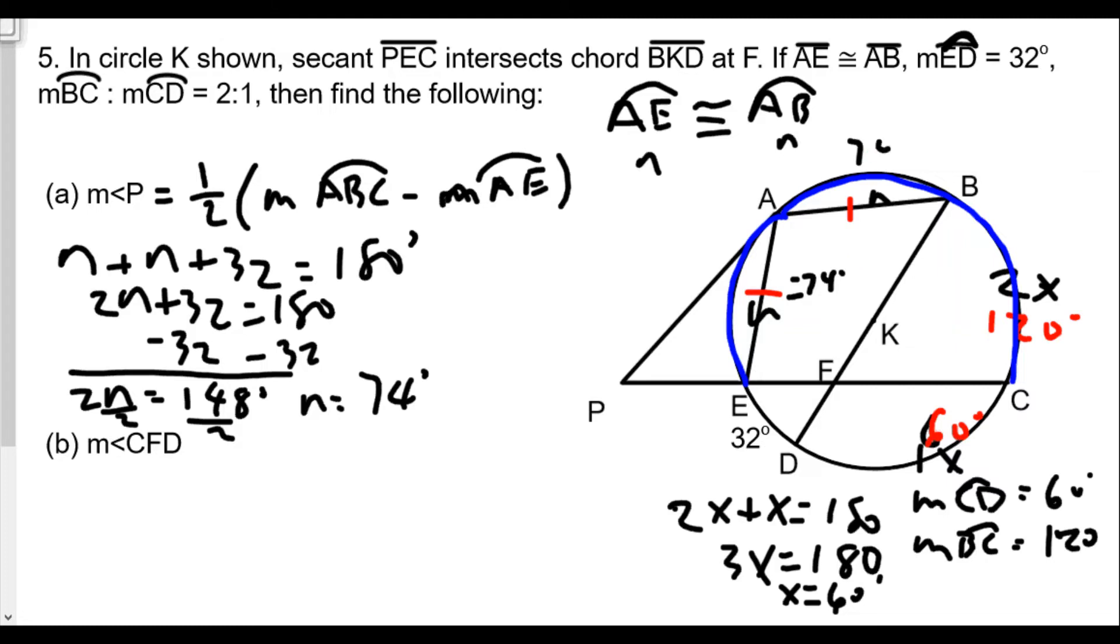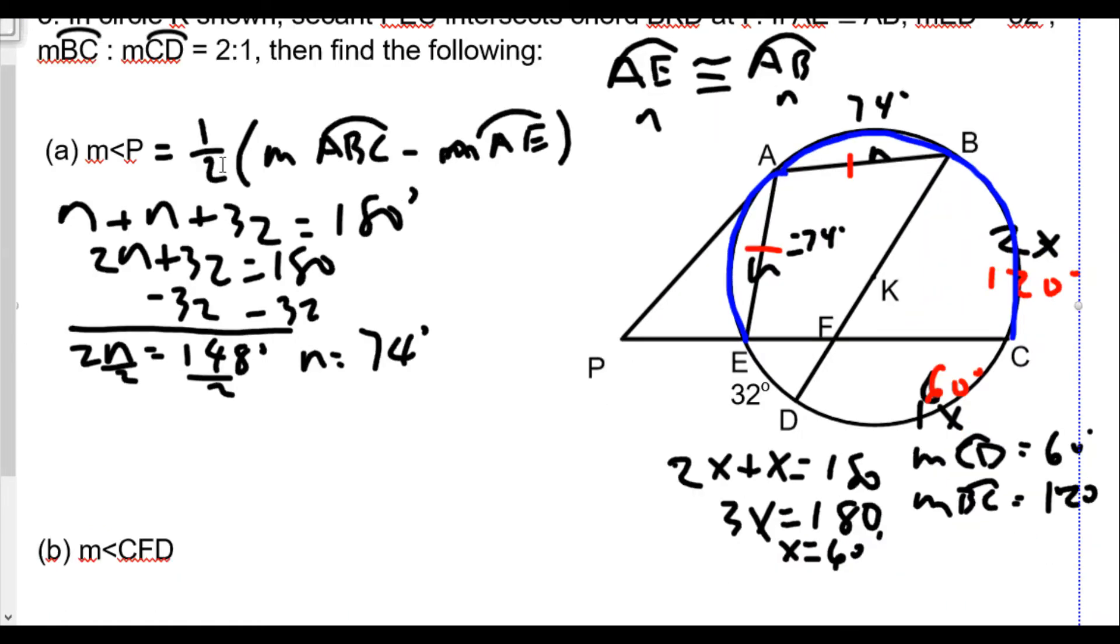So this is 74 and this is 74. Now we're going back to our formula. We said that the measure of angle P is one half the measure of arc ABC minus measure of arc AE. Well, the measure of arc ABC is going to be 74 plus 120, which equals 194.